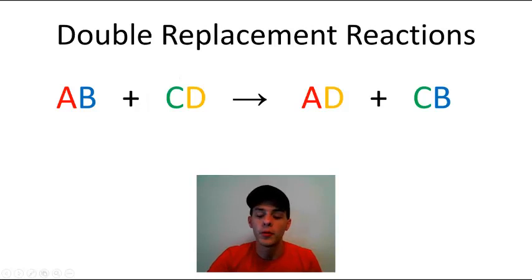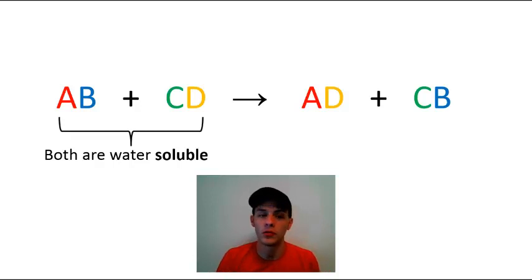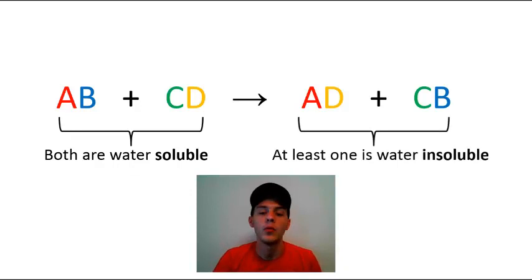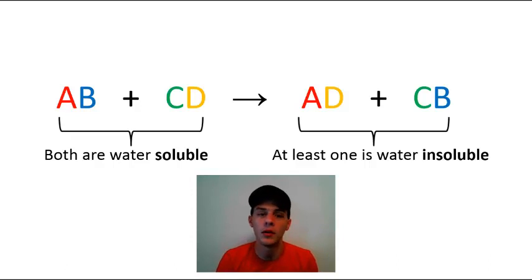In the event of a precipitation reaction, both ionic compounds AB and CD must be water soluble — they have to be water soluble in order to form an aqueous solution that you can mix together. Then with your products, at least one of them is going to be insoluble in water, and because it's insoluble it comes out of the solution.